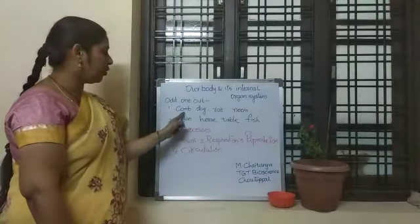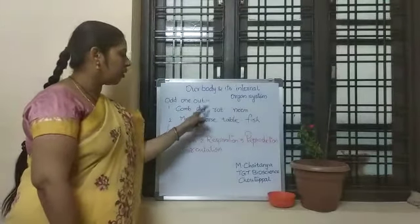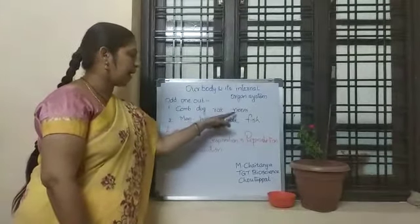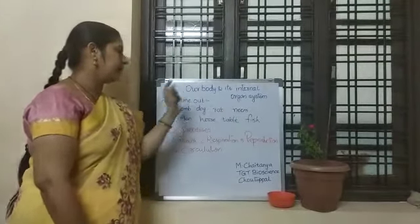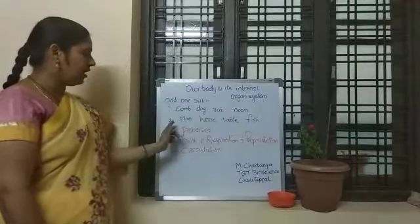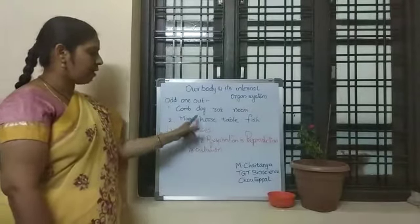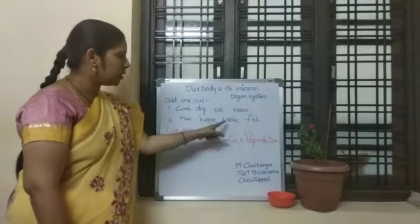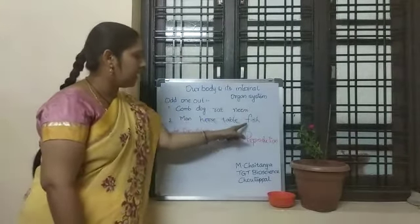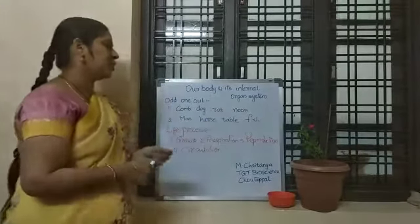First one: comb, dog, rat, neem. Second one: man, horse, table, and fish.